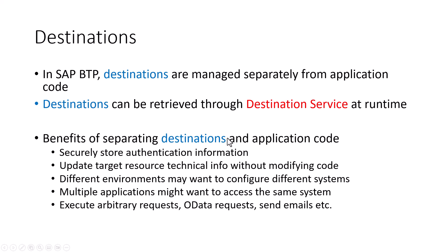Also, if we do need to change the target resource for some reason — so instead of connecting to SAP S/4HANA, like if the host name changes — then we don't have to modify the code. Also, different environments — your production, your dev environment, your QA environment — may be talking to different SAP S/4HANA systems or a completely different system. So we can simply change the destination without having to change the application code. Also, if multiple applications are using the same system, they can all use the same destination as well.